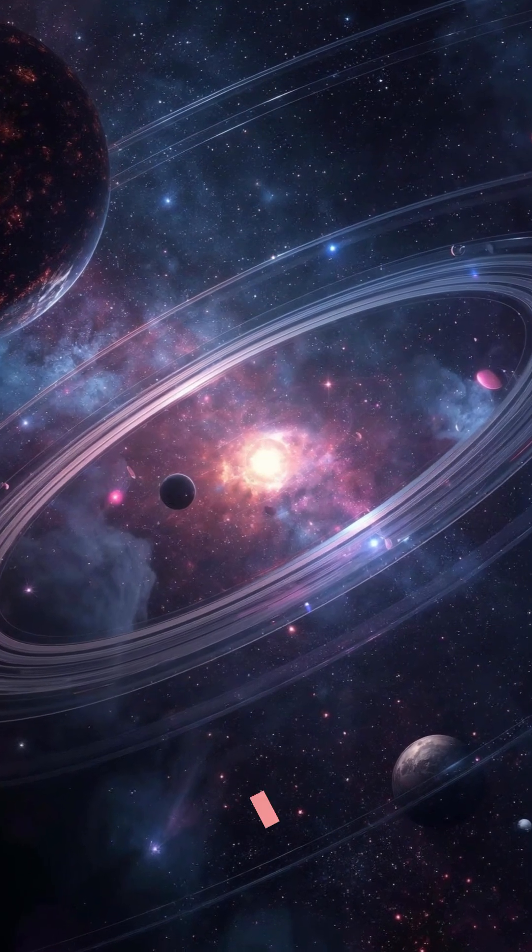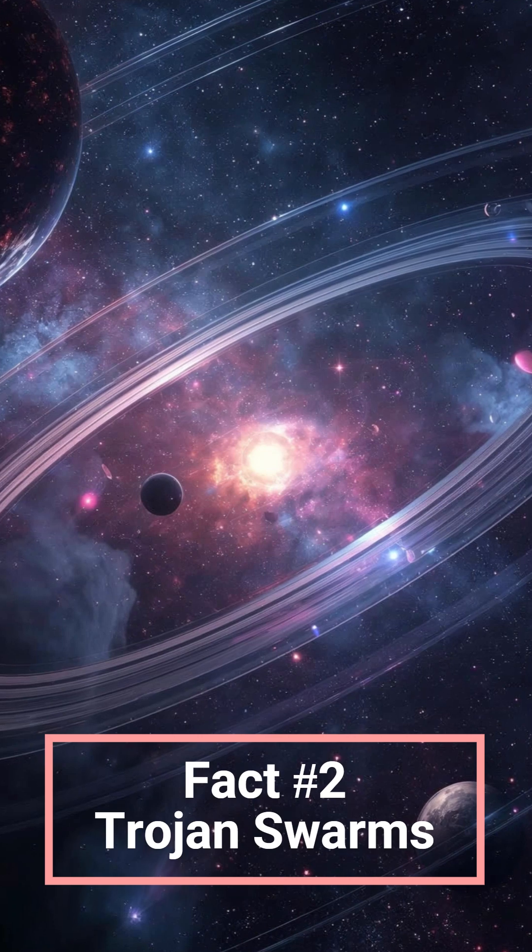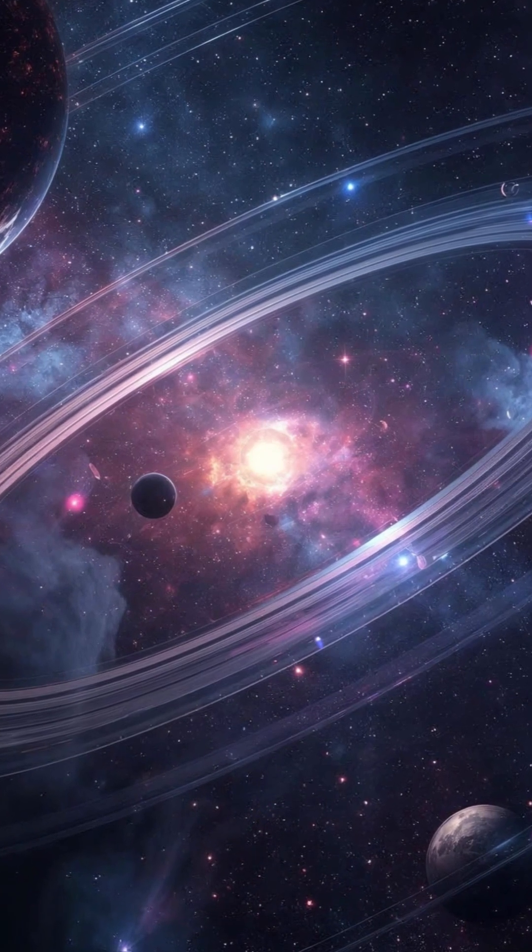Some orbits are shared. Clouds of Trojan asteroids travel ahead and behind planets, locked forever in stable harmony with giants like Jupiter.